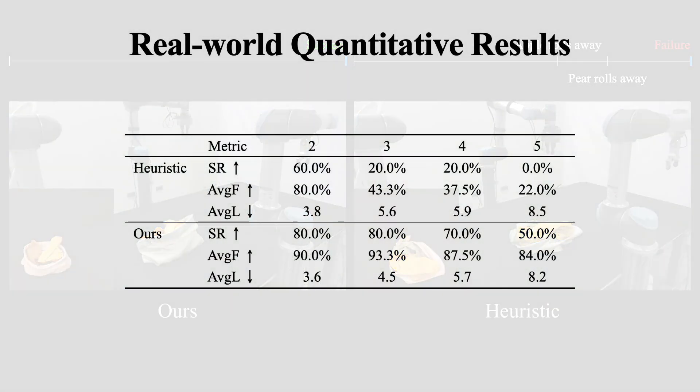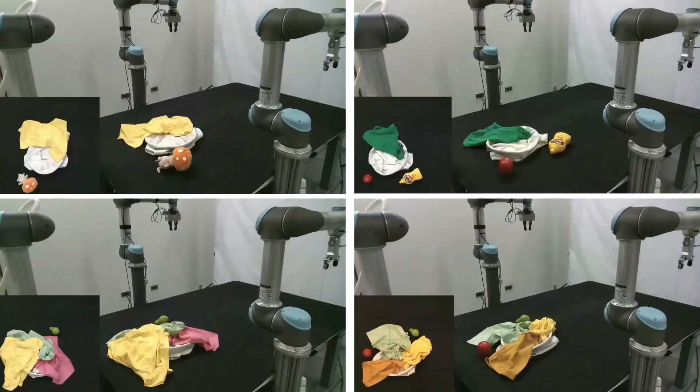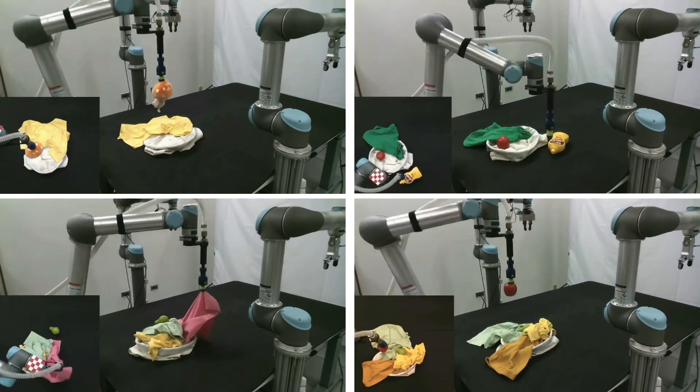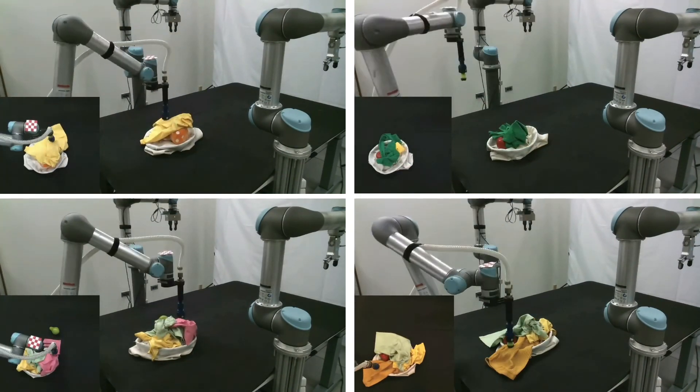Here, we demonstrate a quantitative comparison between the heuristic and our simulation trained policies in the real world. As you can see, our policy outperforms the heuristic and performs progressively better as the number of objects increases. These are some successful real-world experiments, and more can be found on our website.